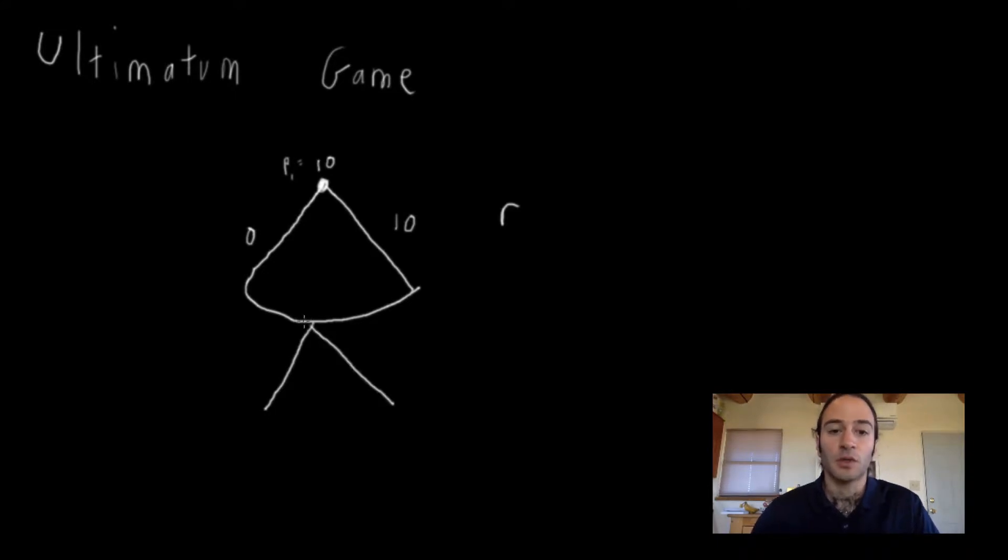So Player 2 can either accept or reject the offer. If he accepts, Player 1 gets 10 minus R, and Player 2 gets R. If Player 2 rejects the offer, they both get 0. We'll call it D, because R is the offer, so D means he'll deny the offer.